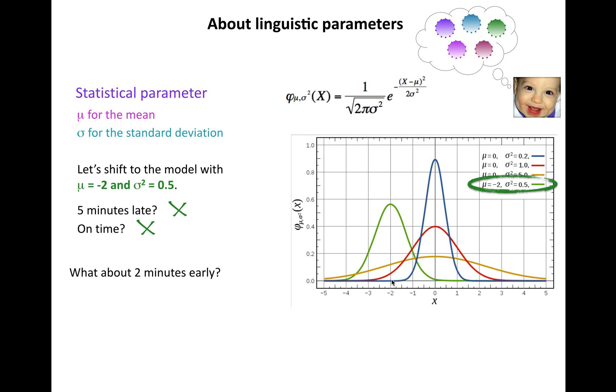What about two minutes early? That's where we see a spike. Much more probable that I will be two minutes early given these parameter values.